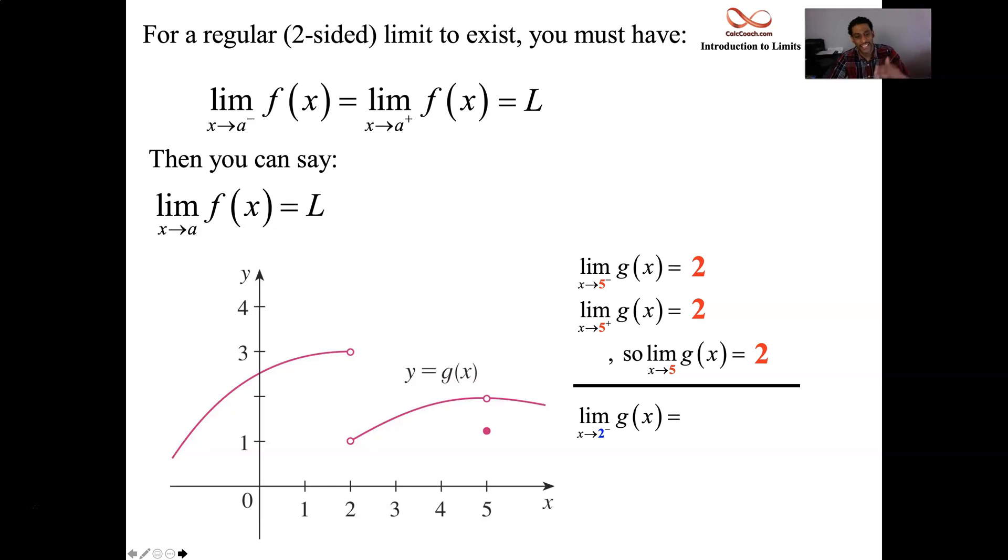From the left, you're not headed to 2. You're headed to 3. From the right, you're headed to 1. And there is no function value there. It doesn't matter though. They disagree. Because they disagree, what you say is that this limit does not exist. And the shorthand for that is DNE. Capital DNE. Lowercase DNE. That's the shorthand for it. This limit doesn't exist. The left hand does not equal the right hand.